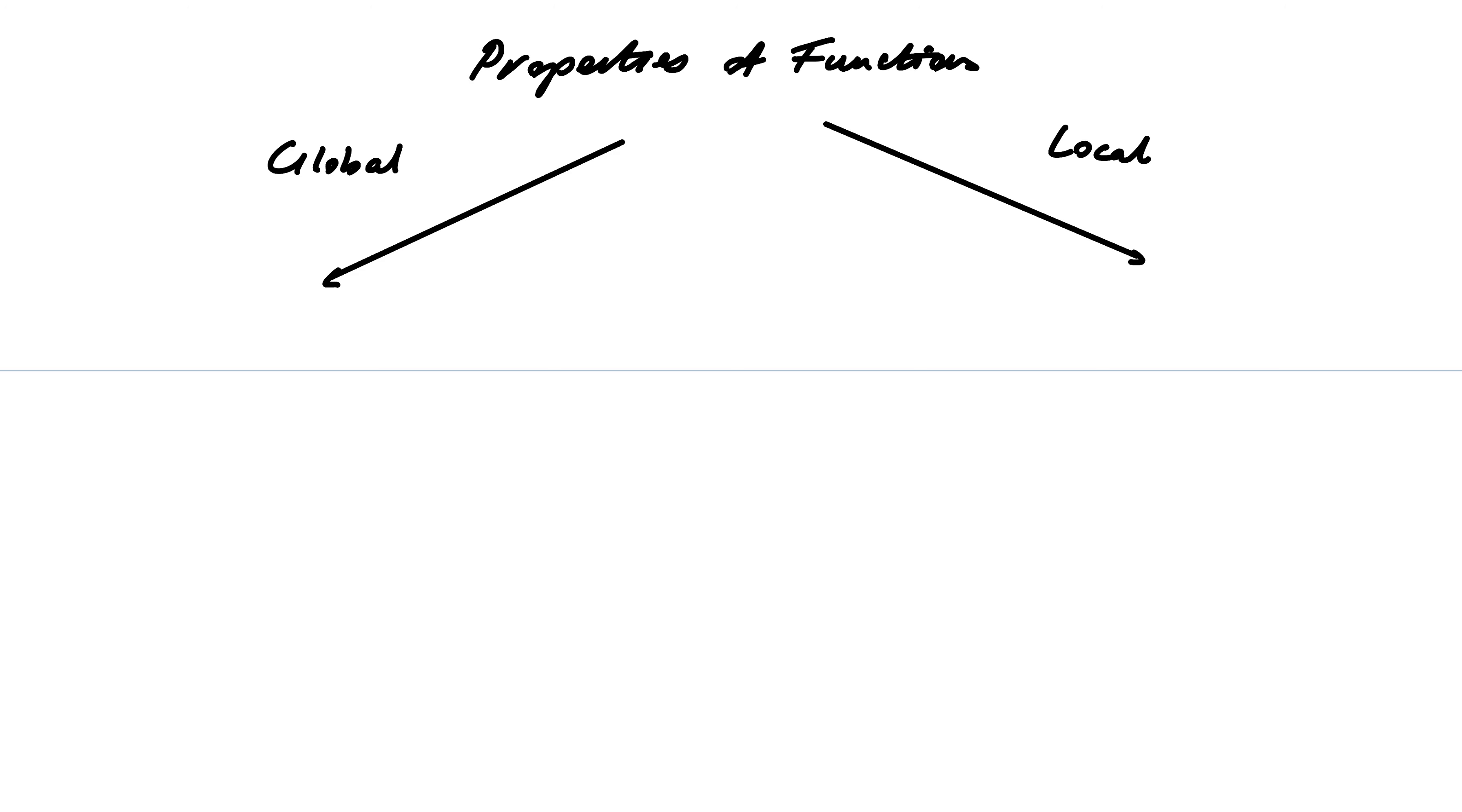But when we're talking about global, global means a property of the whole function everywhere. So it's things that are true or hold when considering the entire domain. The whole domain. That's a global property.